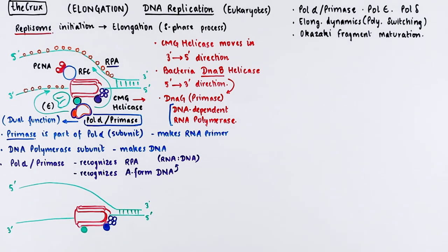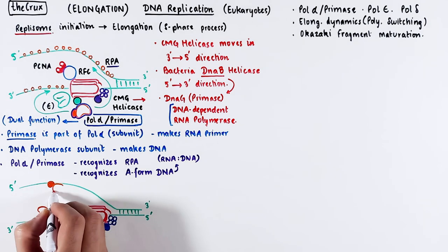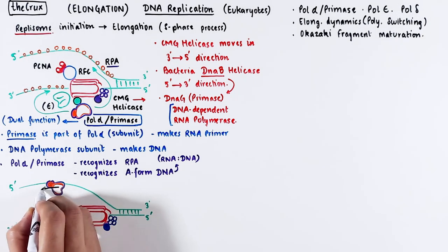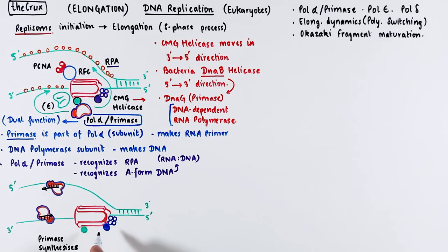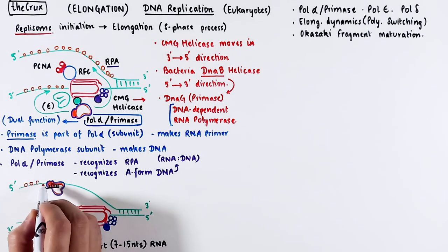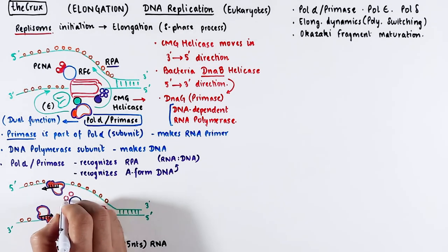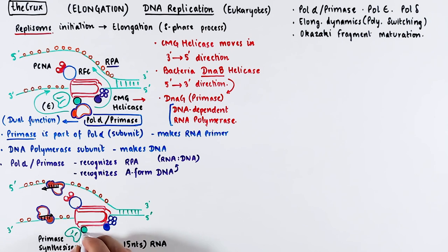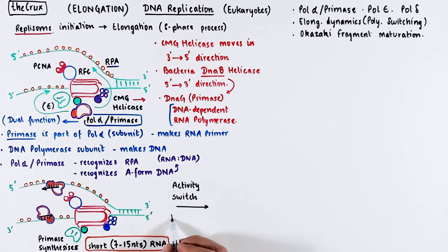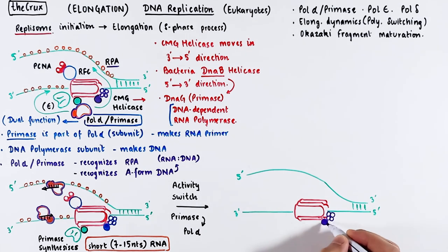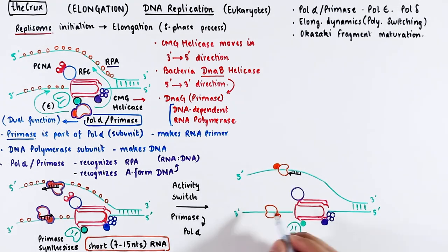The first productive contact is made by the primase subunit of the polymerase alpha. The primase then synthesizes a short 7-15 nucleotides long RNA primer. The rest of the proteins on the CMG helicase remain relatively unchanged when this happens. Soon after this short RNA primer is made, there is an activity switch from the primase subunit to the DNA polymerase alpha subunit. Now the contact occurs between the polymerase alpha and the RNA-DNA duplex.